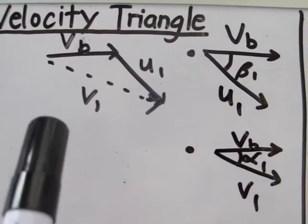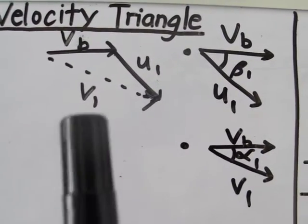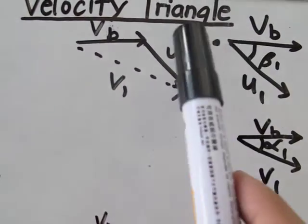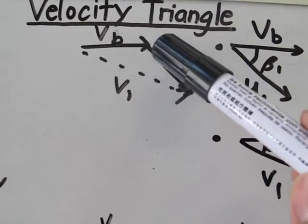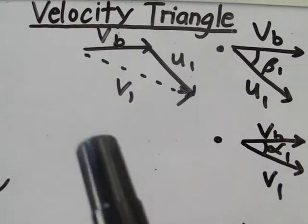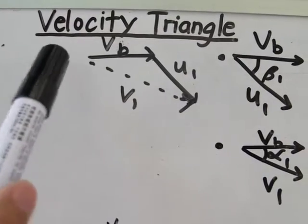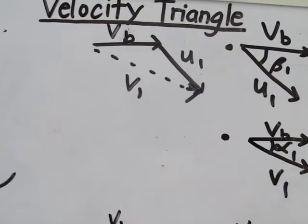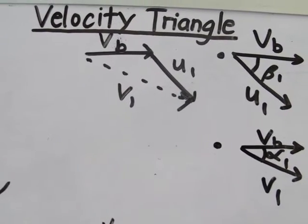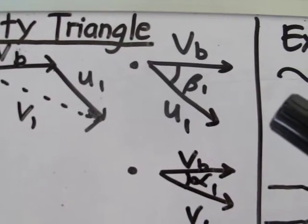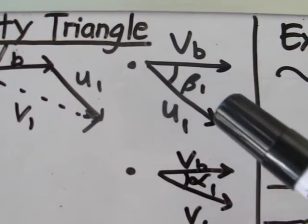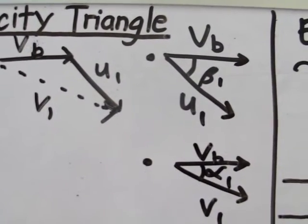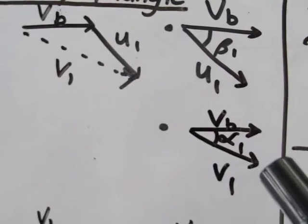Subscript 1 refers to the incoming water. We know the blade is moving with constant velocity to the right. We then draw the relative velocity u1 in its direction, and afterwards get the absolute velocity v1 by connecting the tail of velocity vb to the head of u1 — the tip-to-tail method. The angle between vb and u1 is beta 1, and the angle between vb and v1 is designated as alpha 1.